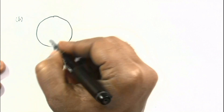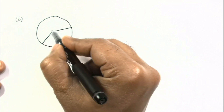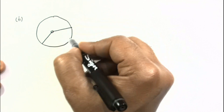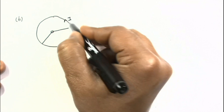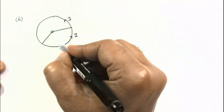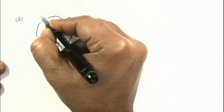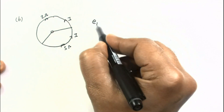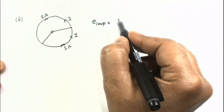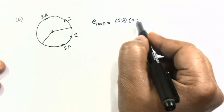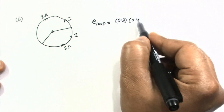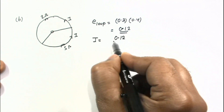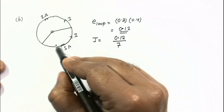For part (b), an ideal voltmeter replaces the ammeter. Since the voltmeter is ideal, its resistance is infinite, so there is no current in the voltmeter branch. The same current i flows through both sections of the circular loop. The total EMF induced in the loop is area × dB/dt = 0.3 × 0.4 = 0.12 V, and the current is i = 0.12 divided by total resistance 7 ohms.